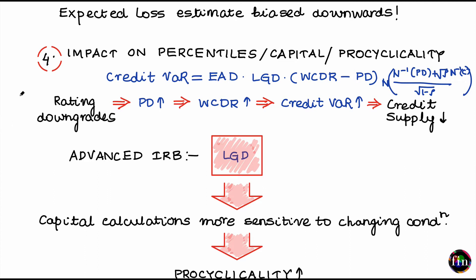So any downturn which triggered this entire reaction becomes even more severe, because the credit supply in the market has been further reduced. This is what we refer to as pro-cyclicality behavior.